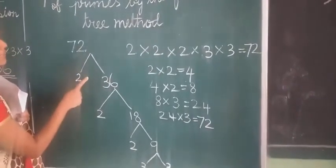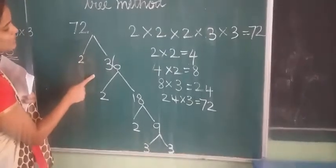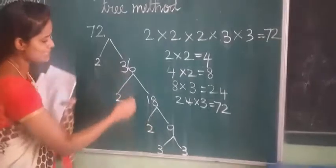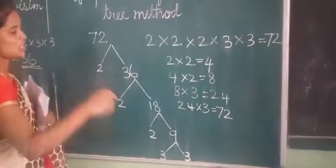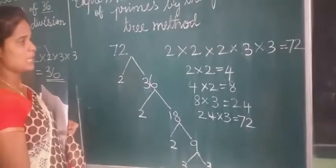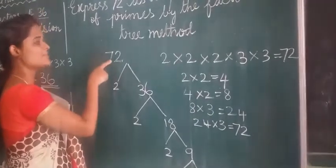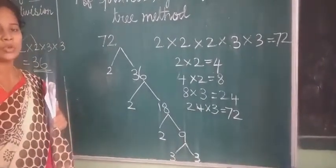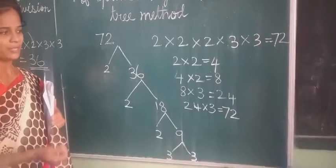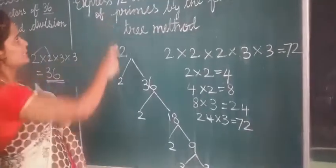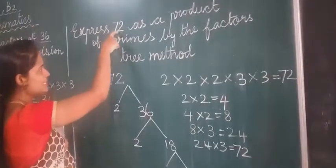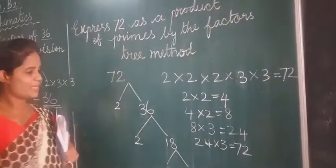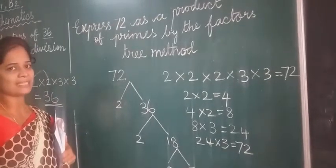This division method is called the tree method. Like branches. Like branches. It's dividing, right? So, this is called tree method. If I give instead of 72 any other number also, you should be able to do by yourself. Good students. This is using 72. We are using which method? Tree method. Now, we will see the exercise in your book.